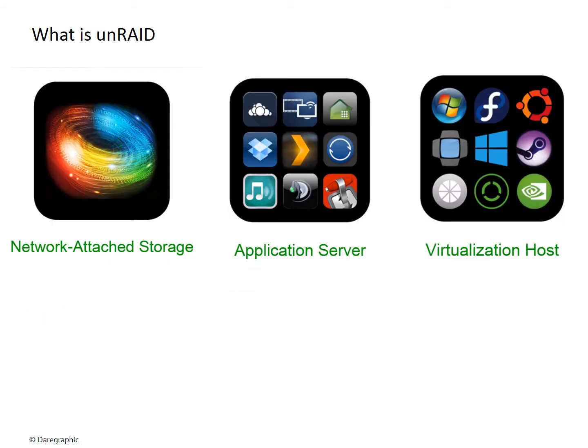Unraid is a server OS that includes three main modules: a NAS, application, and virtualization server. Let's look at each of them in more detail.